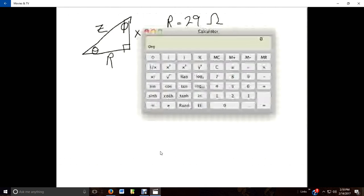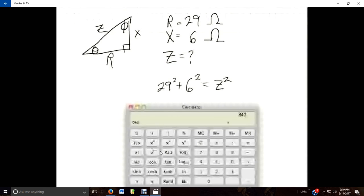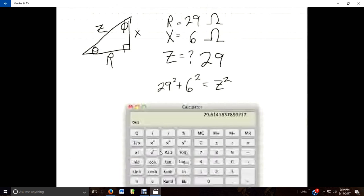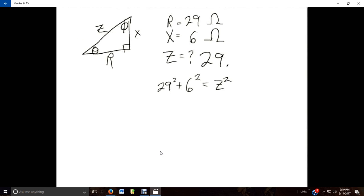At this time, I see that 29 squared is 841. And I will add to that 6 squared. It's 36, giving me a grand total of 877. Now I will hit my square root button. And that gives me a Z value of 29.